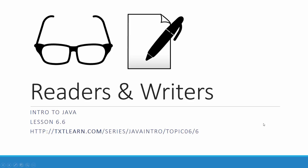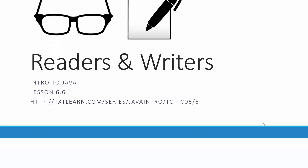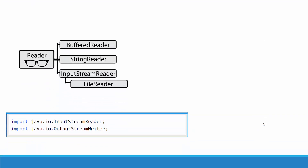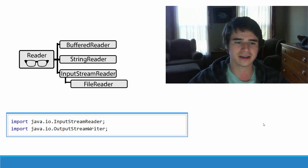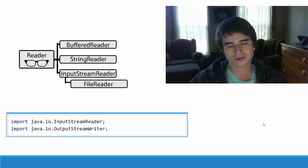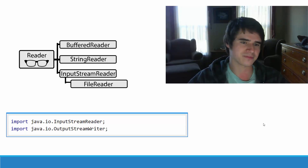Hello, this is Kevin Olson from TextLearn.com, and welcome to Lesson 6.6 of the Intro to Java series. In this lesson, we will be discussing Readers and Writers. Readers and Writers are additional objects provided by the Java API, which we can use to read and write characters from files.